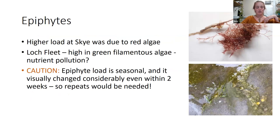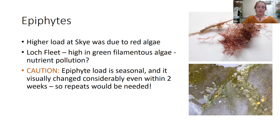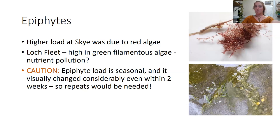Interestingly, I found a much higher algal-to-seagrass mass ratio at Skye than at my other two subtidal sites. Most of that mass was due to a type of red algae — which I think is a type of Polysiphonia — that appears naturally and is not thought to be associated with nutrient input. However, at Loch Fleet, the most northerly intertidal site I visited last year, there were loads of green filamentous algae that really seemed to be smothering the eelgrass, and that type of algae is associated with high nutrient inputs.